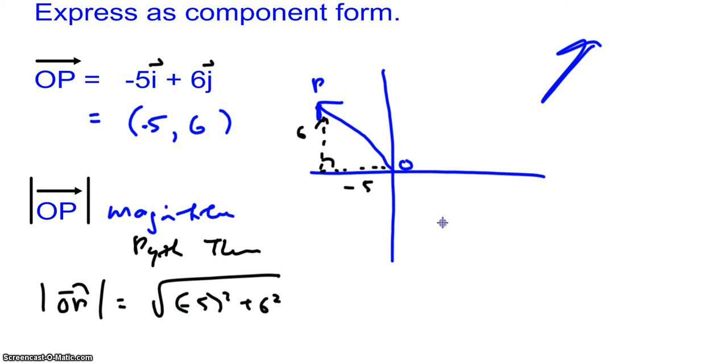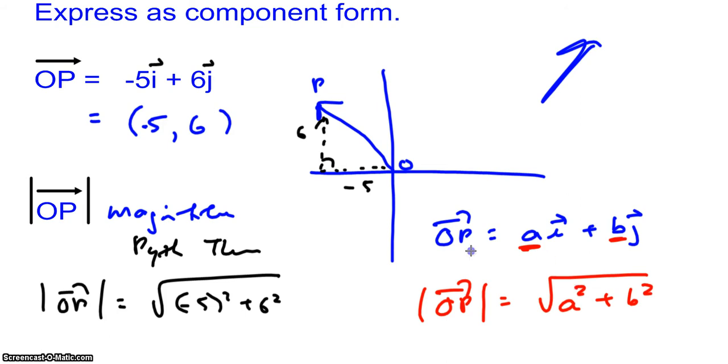So we want to generalize this. Any vector can be represented as, in general form, ai plus b times the unit vector. And what we're going to do is find the value of OP. All we have to do is take, to find the magnitude of OP, all you have to do is just take the scalar multiples and use it in the Pythagorean theorem.